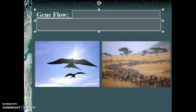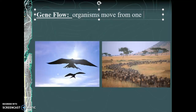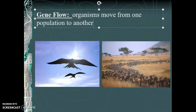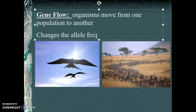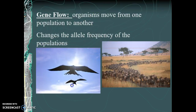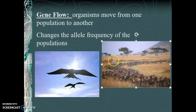The second factor is gene flow — when organisms move from one population to another. This changes the allele frequency of both the population you move into and the one you leave behind. This applies to migrating populations like geese or herds of wildebeest merging together. Populations are always changing their allele frequency when new individuals move in or out. In the next lecture, we'll look at the other three factors and how they combine to create new variables.